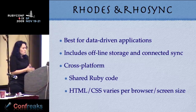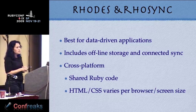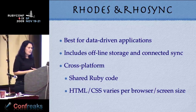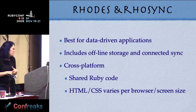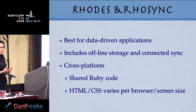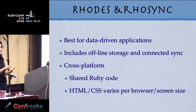So, Rhodes is the client-side technology, and there's a server-side technology called RhoSync. Rhodes and RhoSync are really best for data-driven applications — you can develop those kind of applications really quickly. You've got local data on the phone that ties into all the platform-specific stuff, and you don't have to deal with it in a platform-specific way.